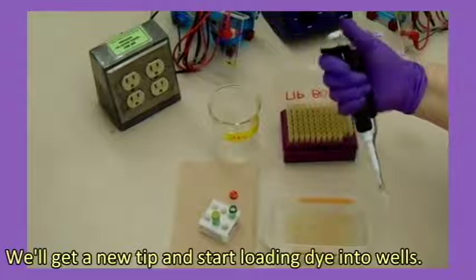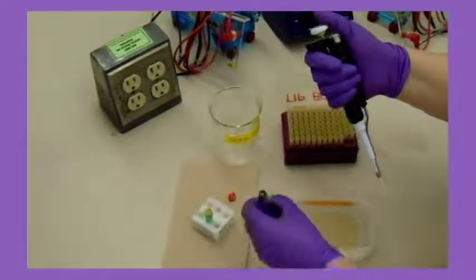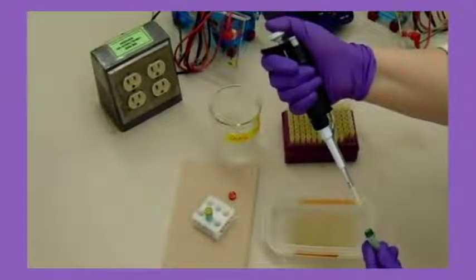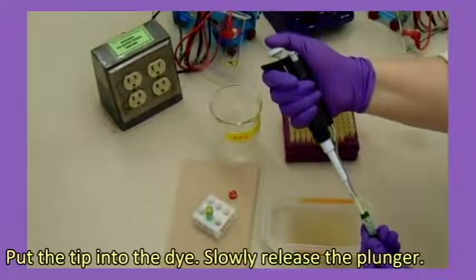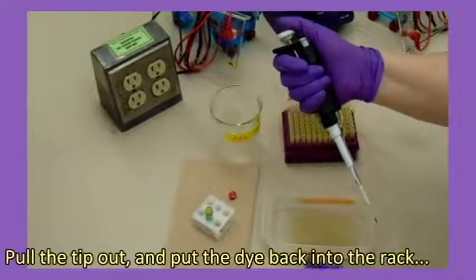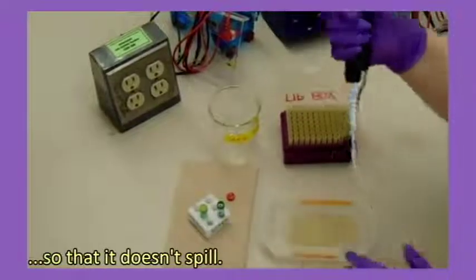We'll get a new tip and start loading dye into wells. Press the plunger down to the first stop and hold. Put the tip into the dye. Slowly release the plunger. Pull the tip out and put the dye back into the rack so that it doesn't spill.